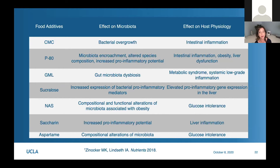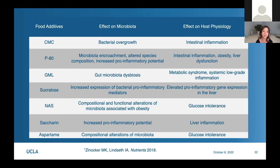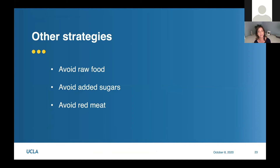A review article examined the relationship between food additives, the intestinal microbiome, and effects on the body. Things like aspartame and many other additives caused dysbiosis, bacterial overgrowth, and ultimately more GI inflammation, metabolic syndrome, and glucose intolerance in both humans and animals studied. If you're going to make one change to help improve your gut bacterial balance, eliminating ultra-processed foods is probably a good idea. Other strategies to consider include avoiding or limiting raw food, avoiding added sugars, and limiting red meat.